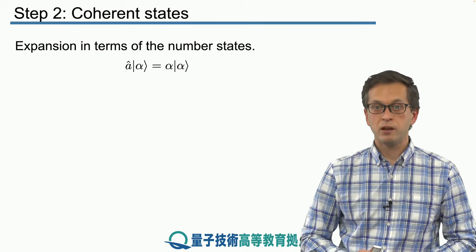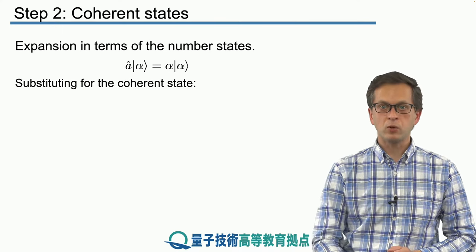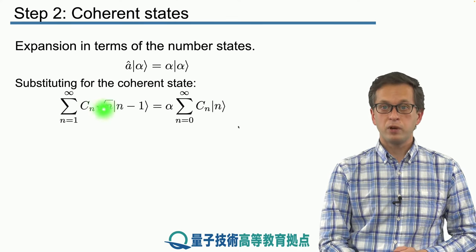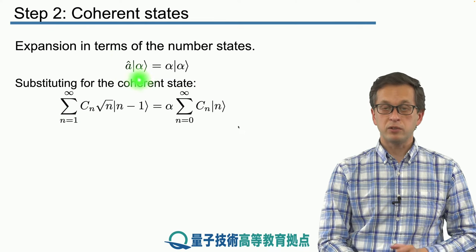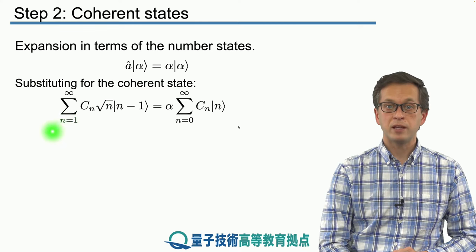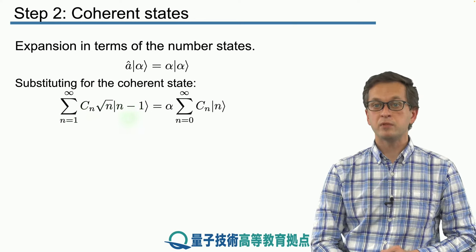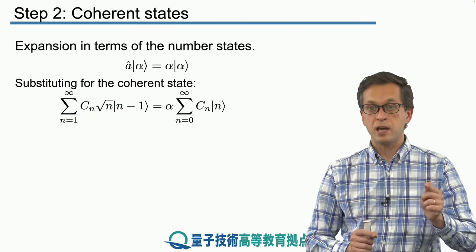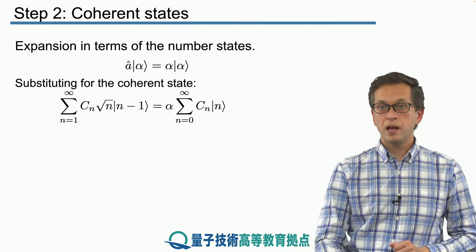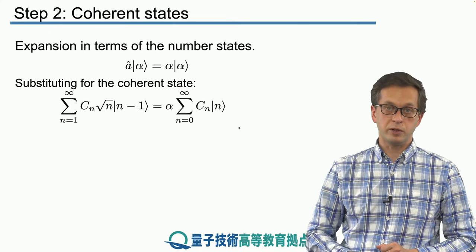What we can do is we can take our eigenvalue equation and substitute for ket alpha. On the left hand side, what we obtain is the following sum. When we have A acting on 0, that term disappears. So we have the following sum, not going from n equals 0, but n going from 1 to infinity. Cn times square root of n times the number state n minus 1. Because A lowers the number from n to n minus 1. And on the right hand side, we just substitute our expansion for ket alpha, for the coherent state.